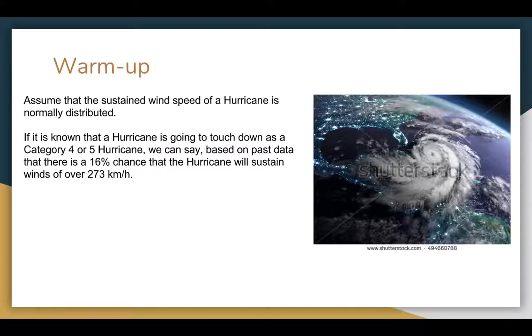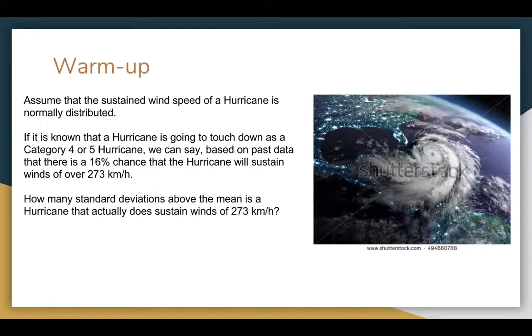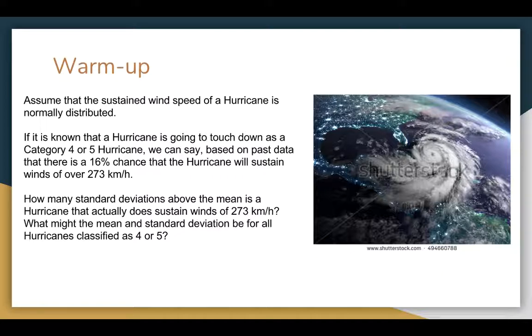So if we know that there's a 16% chance that a hurricane will sustain winds over 273 km/h, the question is how many standard deviations above the average is the hurricane? And what might be the mean and what might be the standard deviation? And again, so this is for Category 4 or 5 hurricane winds.